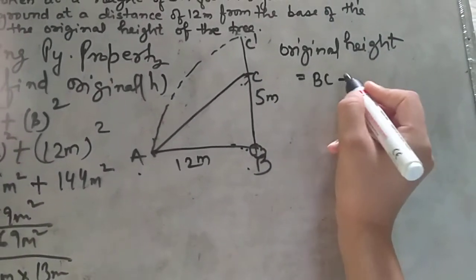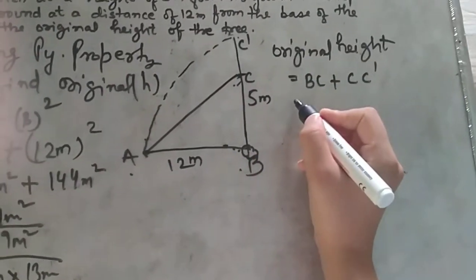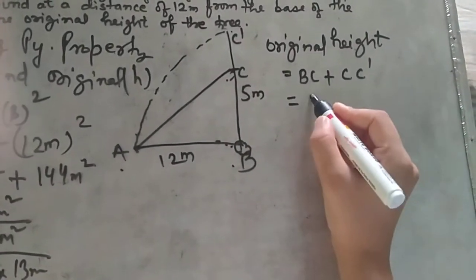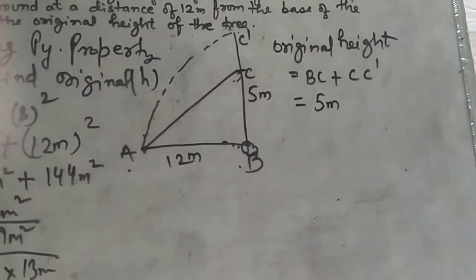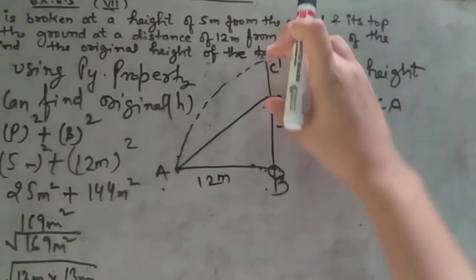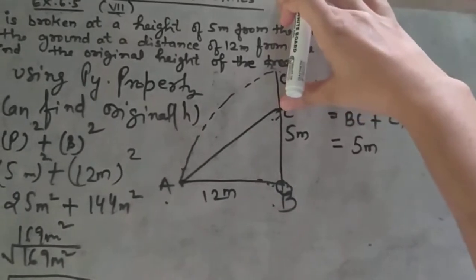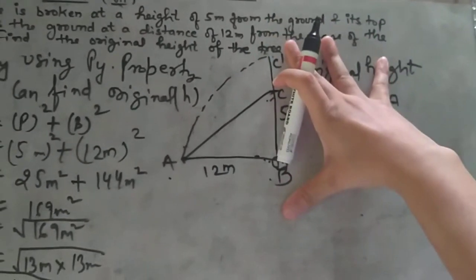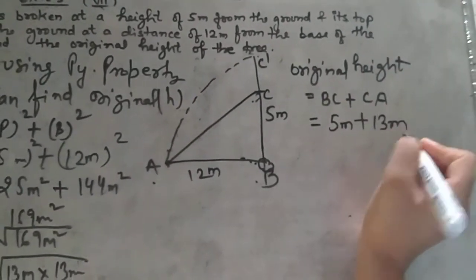The original height is BC plus CC dash. We know that BC is 5 meters, and we have seen that this part was dropped. When standing upright, this line will be complete as the height, and AC is 13 meters.